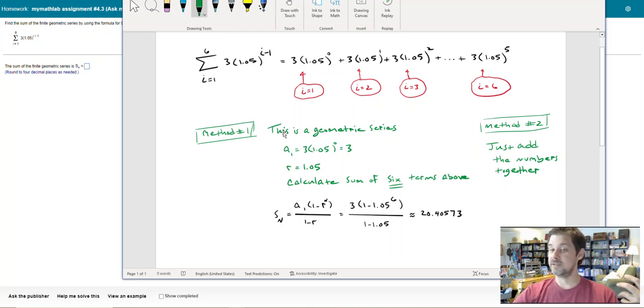To understand this geometric series, the first term is this term here, and if you calculate that, 3 times 1.05 to the zero power is 3. And r, as I mentioned, is 1.05.